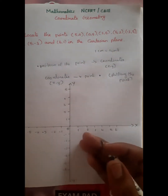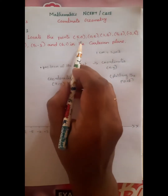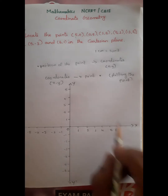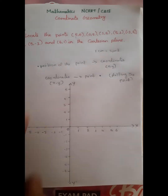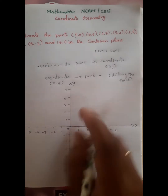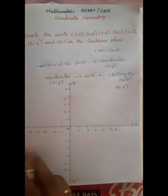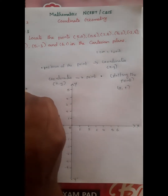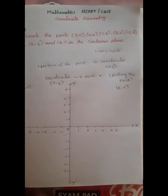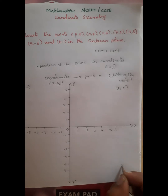The y-axis is positive going upward and negative going downward. Looking at the quadrants: the first quadrant has x positive and y positive (plus, plus). The second quadrant has x minus and y plus (minus, plus). The third quadrant is minus, minus. The fourth quadrant has x positive and y negative (plus, minus).